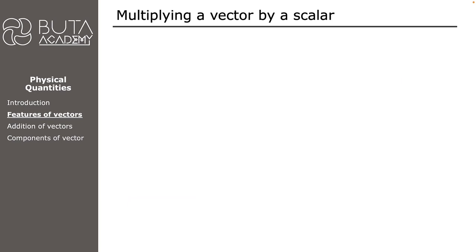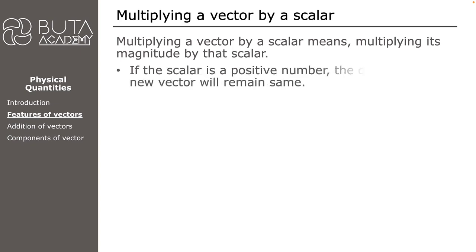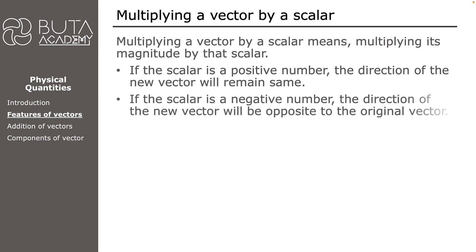In the final part of this video we will learn how to multiply a vector by a scalar. Multiplying a vector by a scalar means multiplying its magnitude by that scalar. If the scalar is a positive number the direction of the new vector remains the same. If the scalar is a negative number the direction of the new vector will be opposite to the original vector.